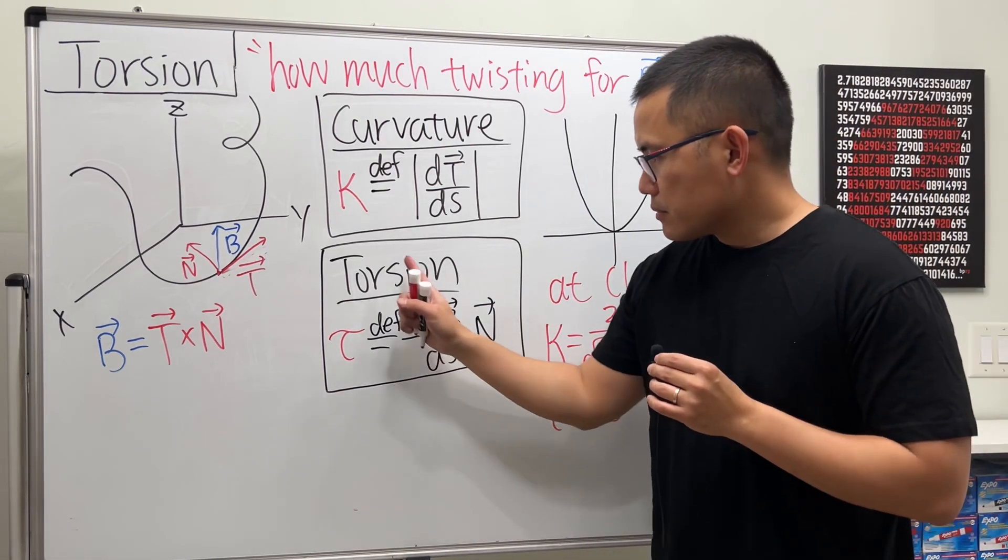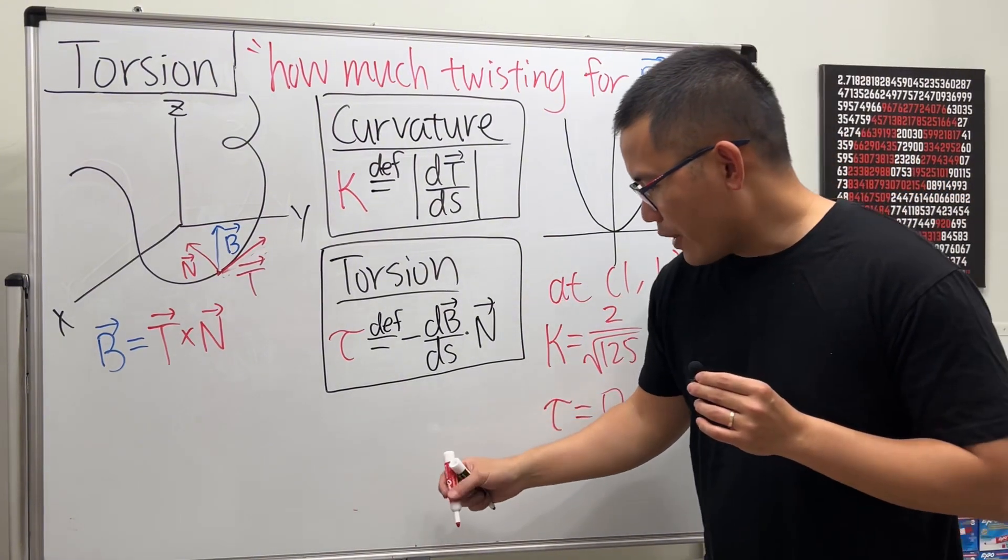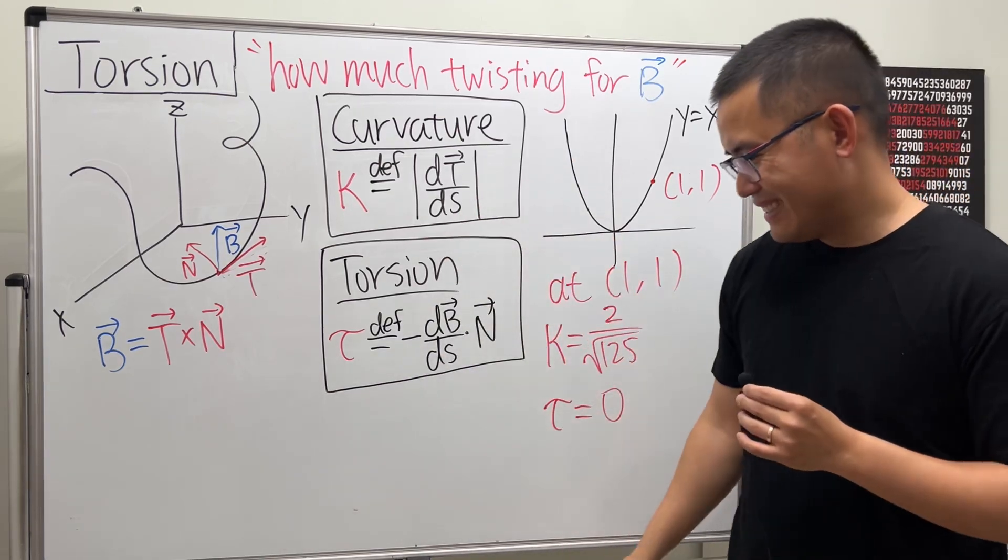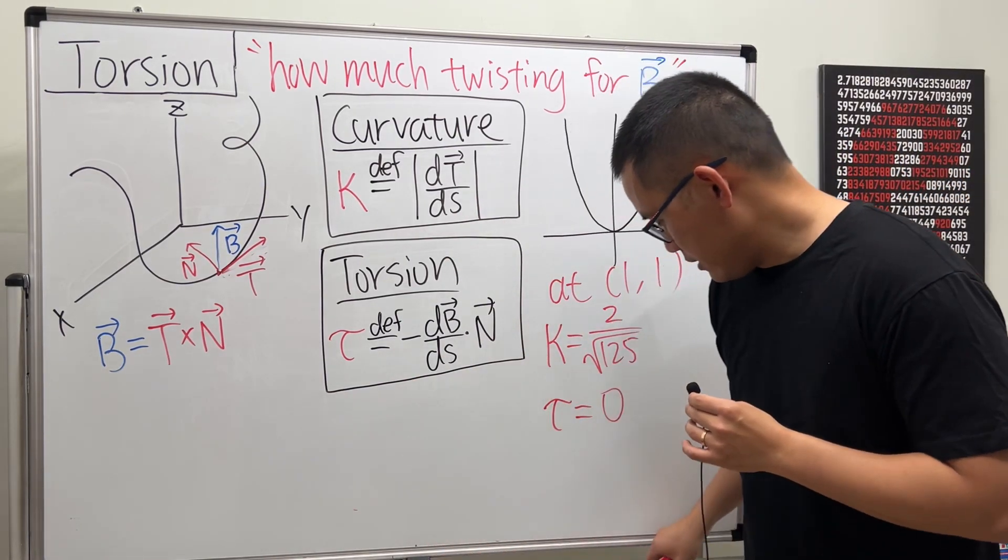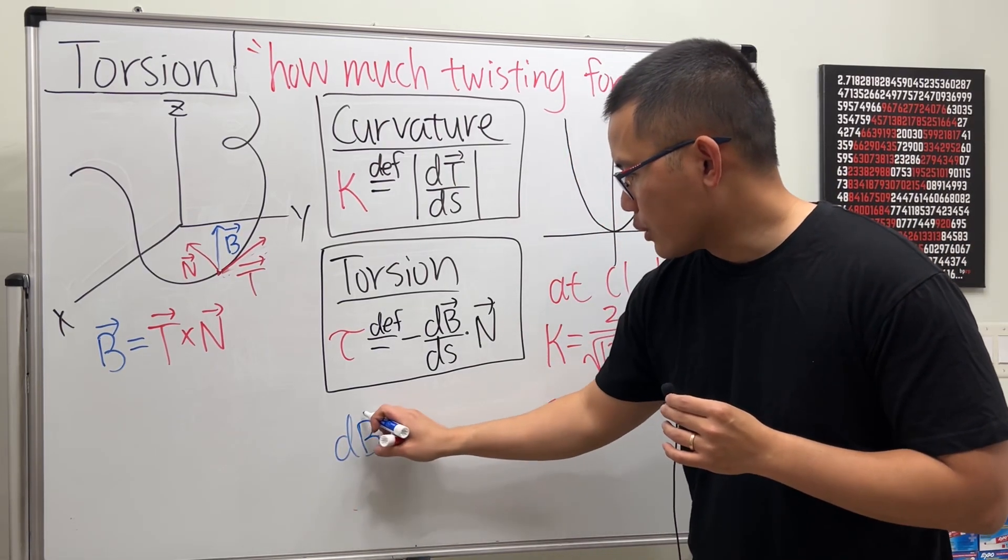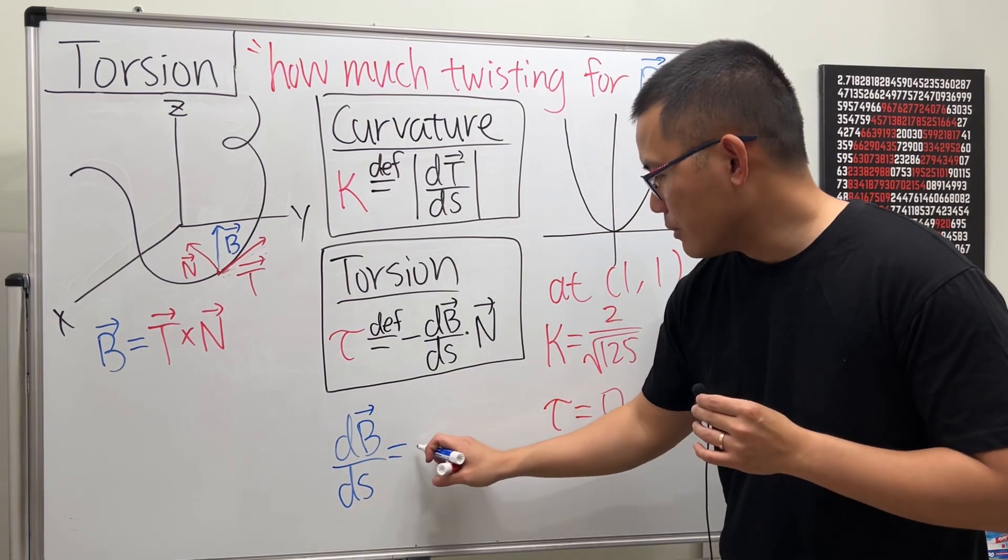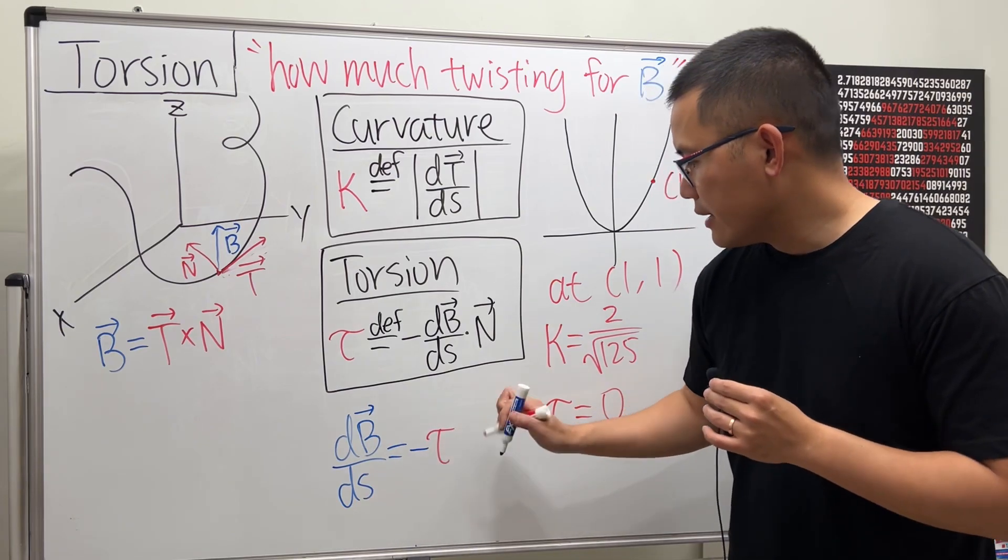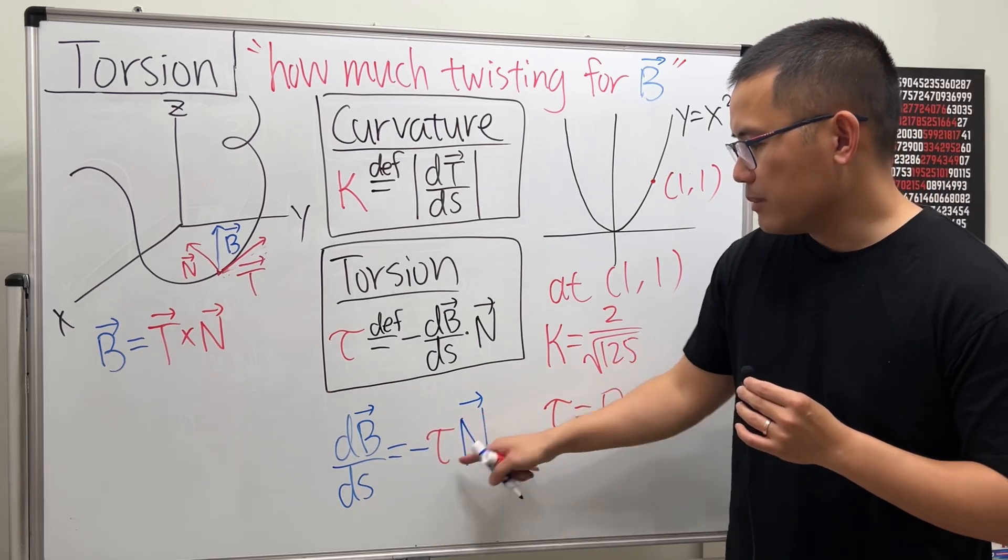And here's the deal though. For the torsion, well, here's one thing that I'm going to show you after this board. One thing that I will show you is that when we take a look at the derivative of B with respect to s, in fact, this right here is a constant multiple—and the constant we write it as negative τ times the unit normal vector—so it's a scalar multiple.